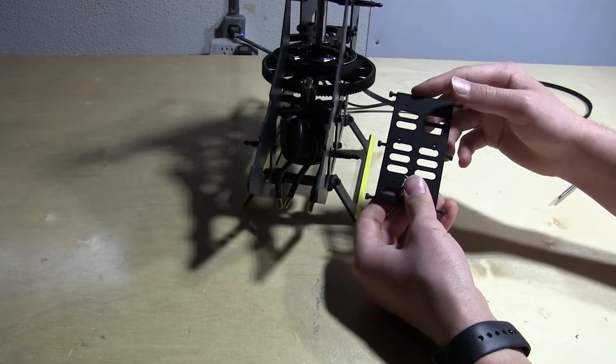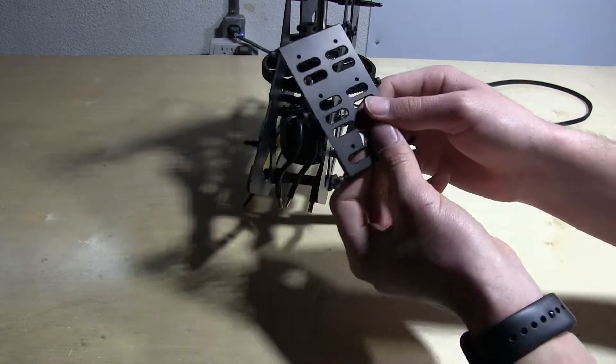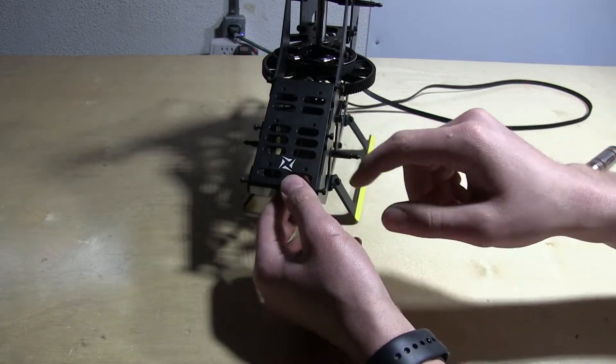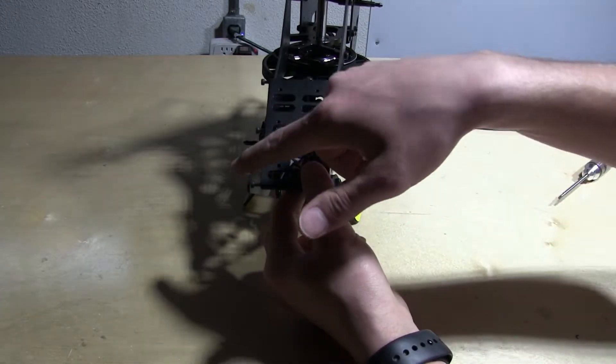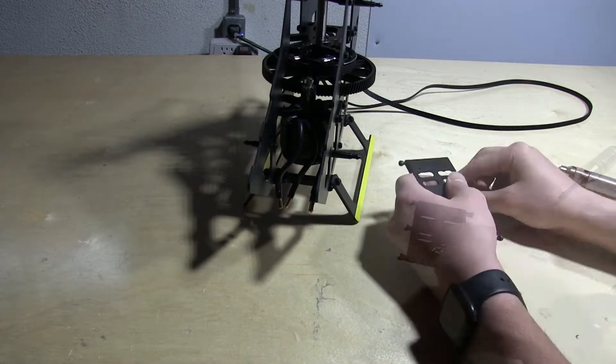Now let's go ahead and install our ESC and battery tray. As you can see it just mounts in the front like so. There is no top or bottom side. I'm just going to install it like that because I like the logo to be down here. And you can see there's just six screws in total so let's go ahead and do that.